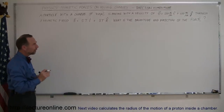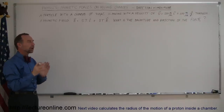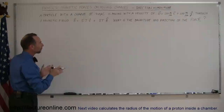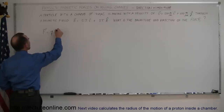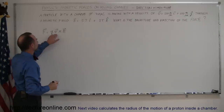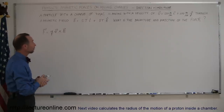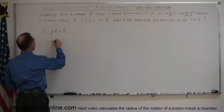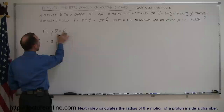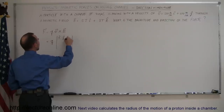Since it's a three-dimensional picture, drawing it may be a little bit difficult, but you probably don't need a picture for that. The force is equal to Q times V cross B. So what we need to do is find the cross product of the velocity vector and the magnetic field vector. This is equal to the magnitude of the charge times V cross B, represented by the matrix with unit vectors I, J, and K.